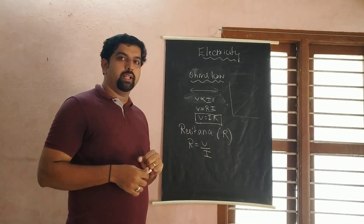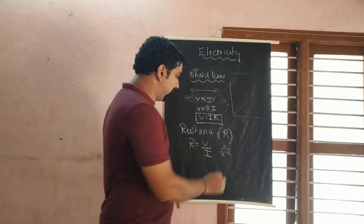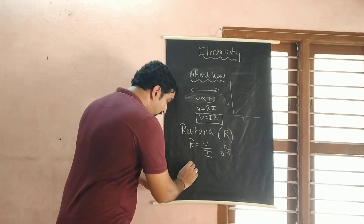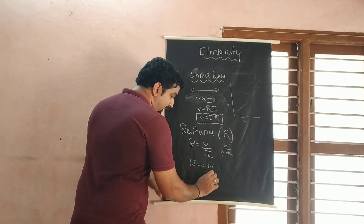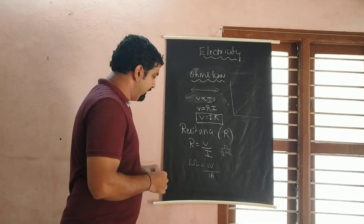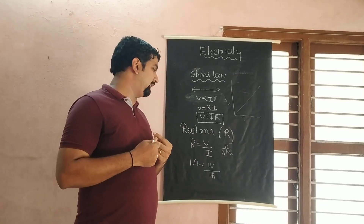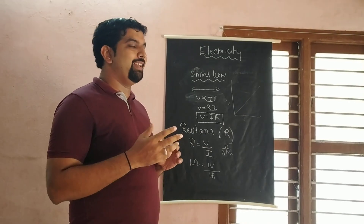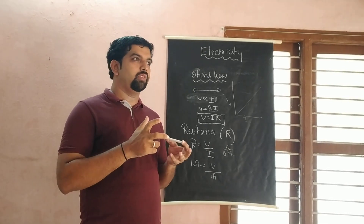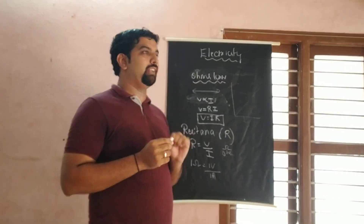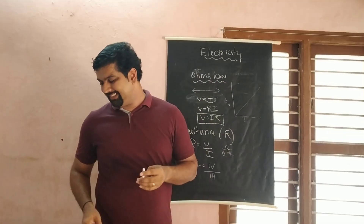The unit of resistance is ohm, represented by the symbol Ω. There is also a device called a rheostat, which provides variable resistance — meaning you can vary the resistance. You can observe this instrument in the science lab. Another device is the resistor, which is used to create a fixed resistance in a circuit.